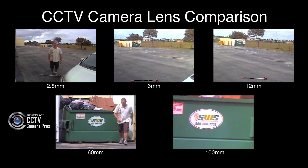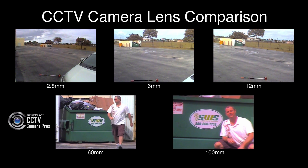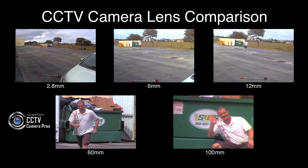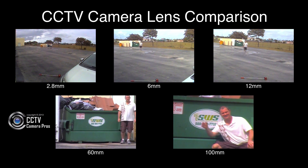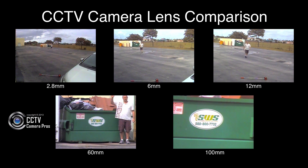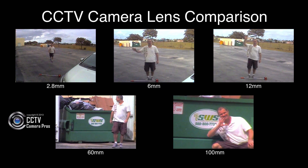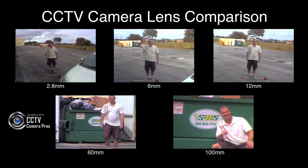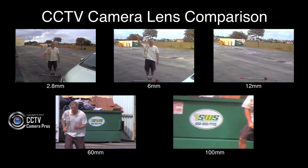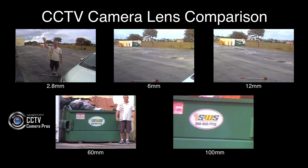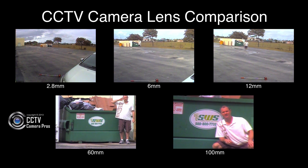You can see how the 2.8mm lens provides the widest field of view but the dumpster appears farthest away. Something important to mention is that I stopped at different distances in front of the camera in the videos where I am walking closer. In the 2.8mm video I stopped 8 feet in front of the camera, and in the 6mm video I stopped 13 feet in front of the camera. Obviously the 60mm and 100mm views are zoomed in too much for it to make sense for me to walk closer to the camera.